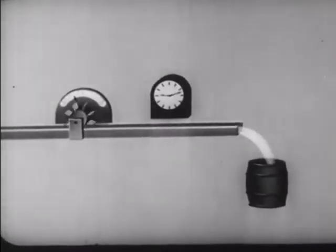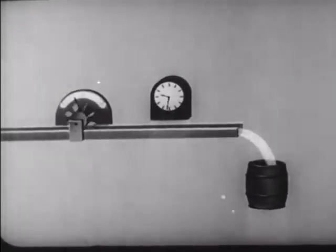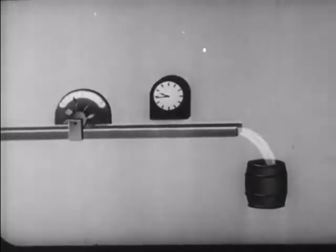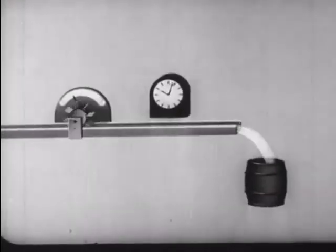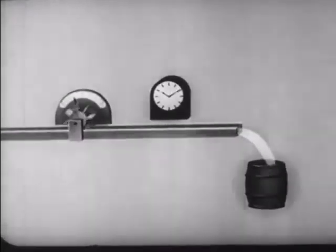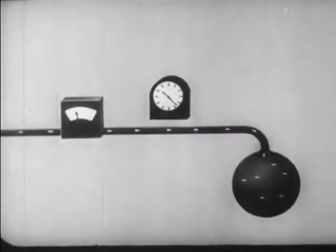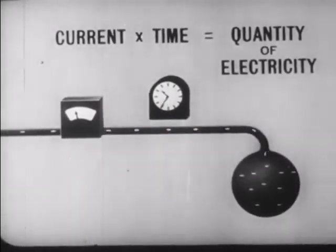Just as in flowing water the total quantity of water is the product of the rate of flow by the time of flow, so in the case of electricity, the product of current by time measures the total quantity of electricity.